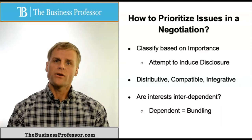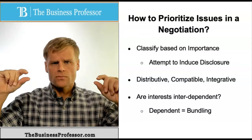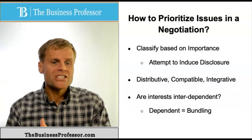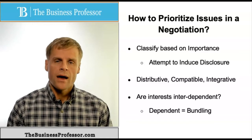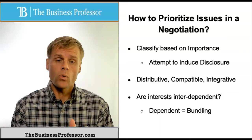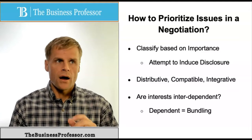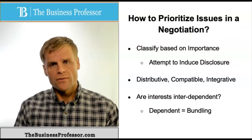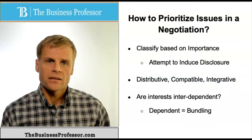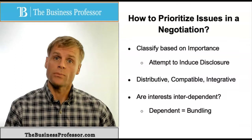Another approach is to identify which interests are dependent upon each other — that is, where a change in one interest or aspect of the negotiation changes another. If you can identify those, keeping dependent interests or issues together allows you to bundle them in a way that enables trade-offs. Both parties may have the same level of interest in the primary issue, but secondary issues are less important to one party than the other. Bundling them together may be effective in getting the other party to make a concession or move towards a point of agreement.